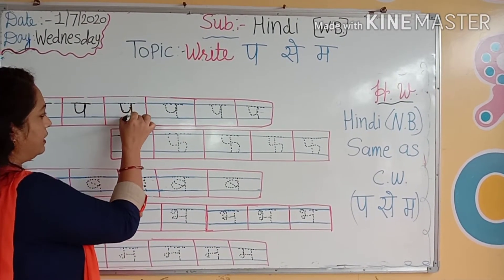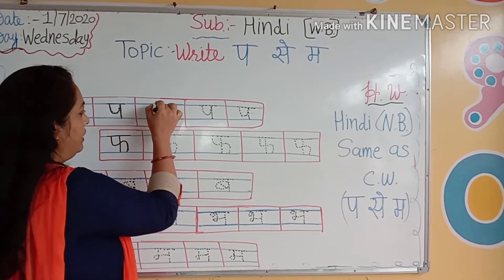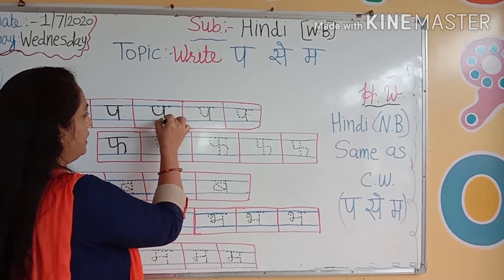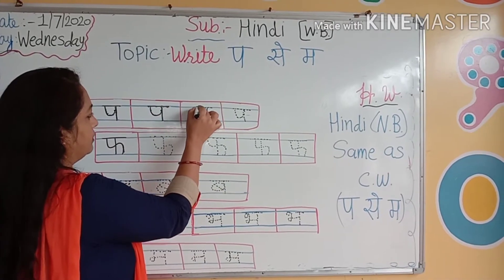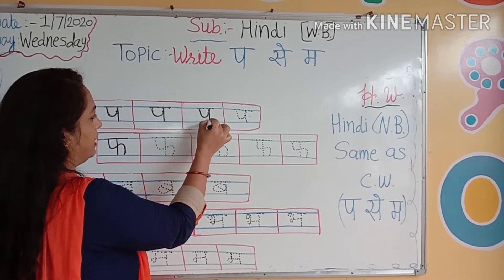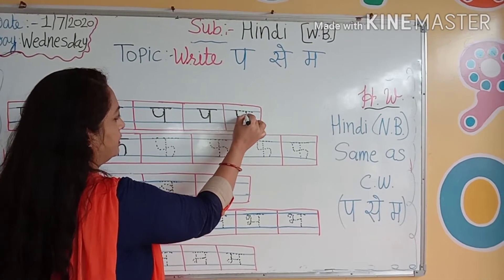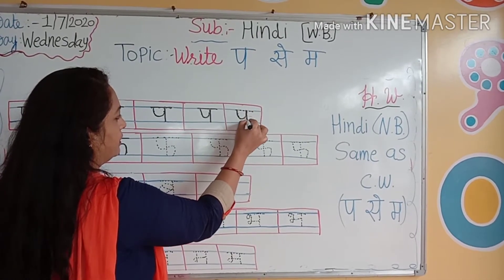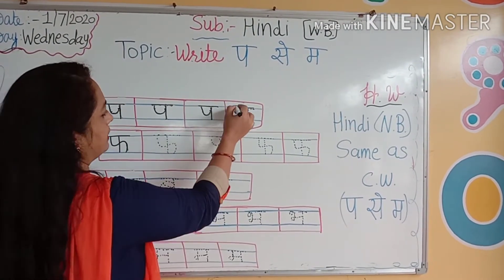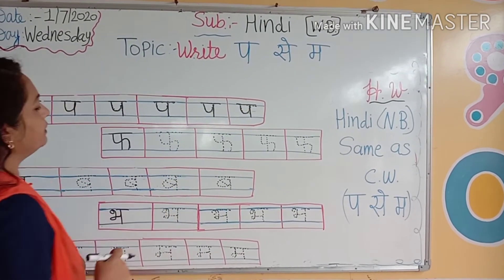We will write here on dots and trace. Par se patang. Par se patang. Dot jo di hai, uske upar mein aise press karte jaana hai. Kya likhna hai? Par se patang. Next.